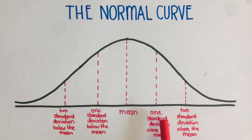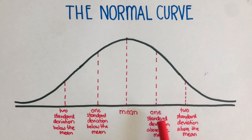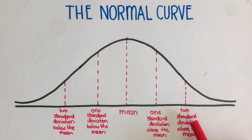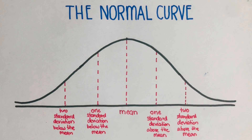On the other side going to the right, that's one standard deviation above the mean, and then two standard deviations above the mean. We always come back to this normal curve whenever we have data that is normally distributed.